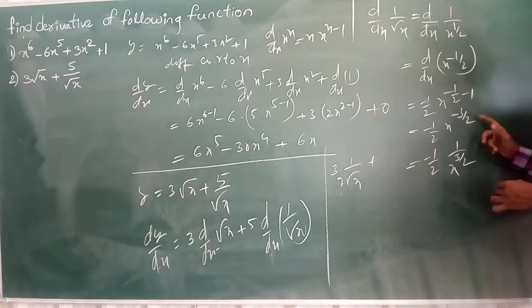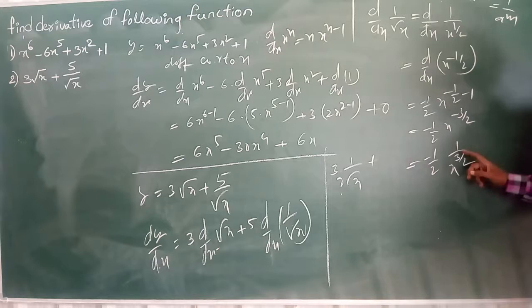I already explained. This power is minus right. We are applying what is that term like. A to the power of minus m is equal to 1 by A to the power of m. By this power. So this is we can write.